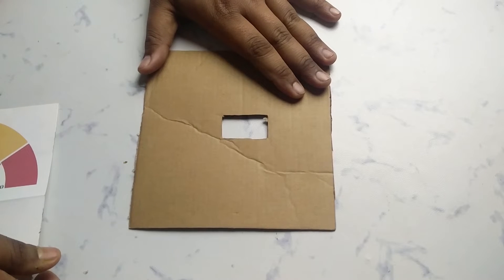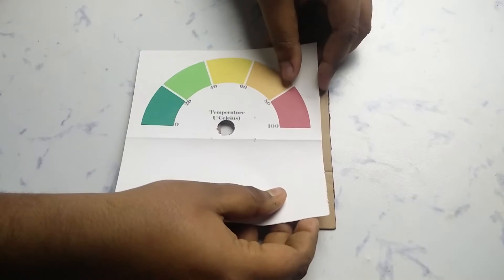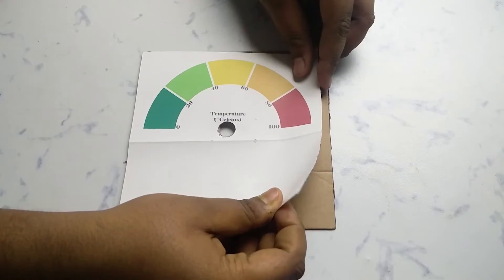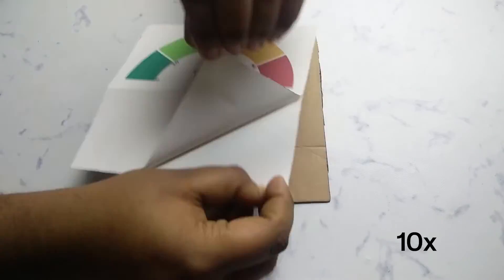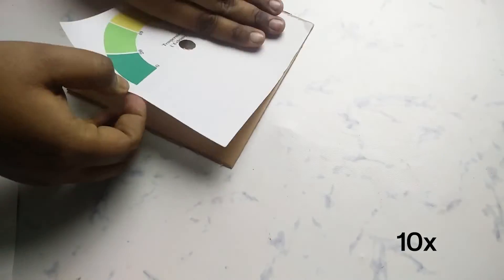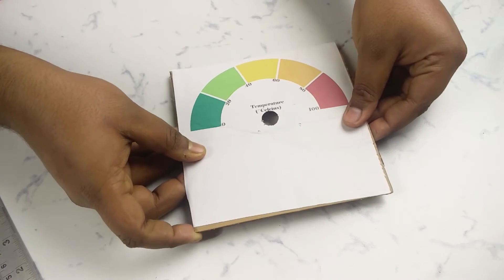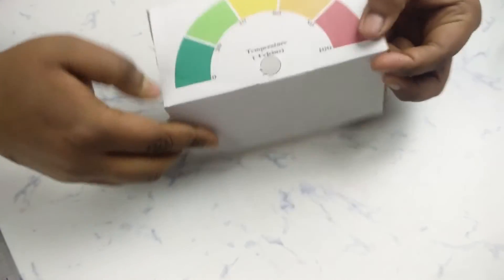For making this analog display I printed this layout on a sticker paper and sticking this to a piece of cardboard. Now I will fold this board into half to make a stand.